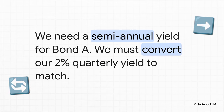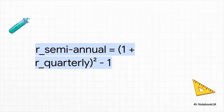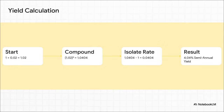Here's a wrinkle: Bond A pays out semi-annually, not quarterly. So we can't just apply that 2% quarterly yield directly — we've got to do a conversion. The idea is simple: we take that quarterly rate and let it compound for two quarters to make a six-month period. Plugging in the numbers — we start with 2% (0.02), compound it for two periods, then subtract one to isolate the rate — and we get 4.04%. That is the perfectly cut key we need for Bond A.